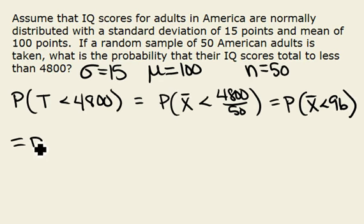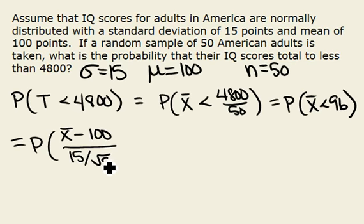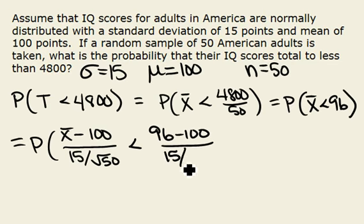So we get the probability, if we subtract the mean of 100 and divide by sigma over square root of n, that's going to turn to a Z. And then we have 96 minus 100 over 15 over square root of 50.